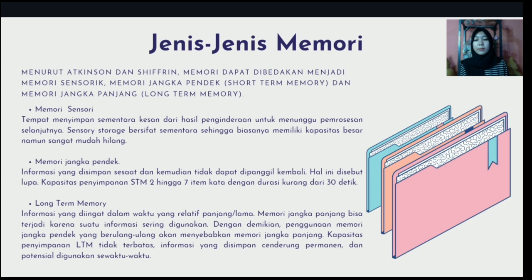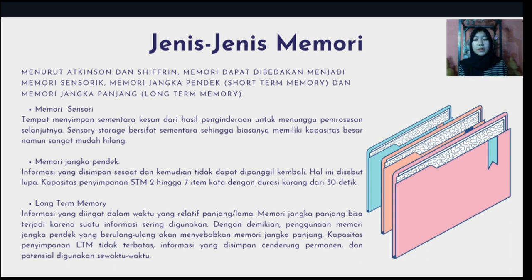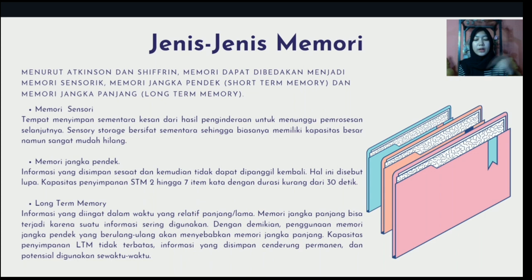The last is long-term memory — information that is remembered for a relatively long time. Long-term memory can occur because an information is often used. Repeated use of certain memory will lead to long-term memory. Storage capacity is not limited, and the information stored tends to be permanent and has the potential to be used at any time. Usually, things that enter long-term memory are memories of the past, memories of childhood, or experiences of very deep sadness or joy.